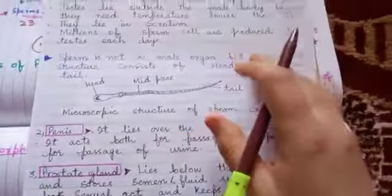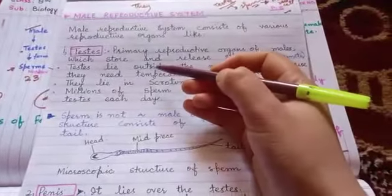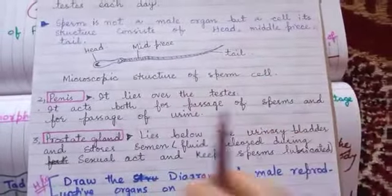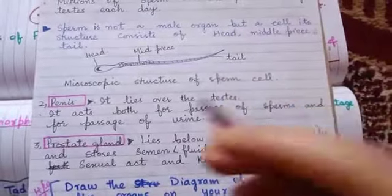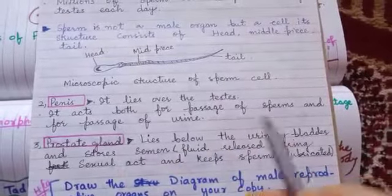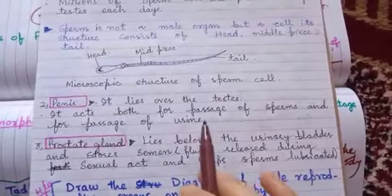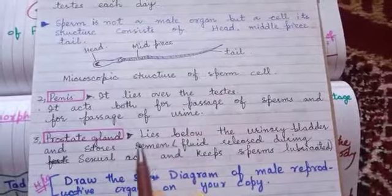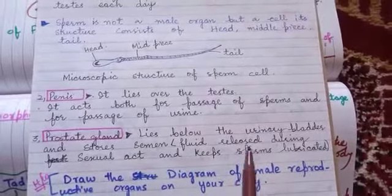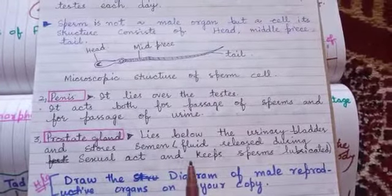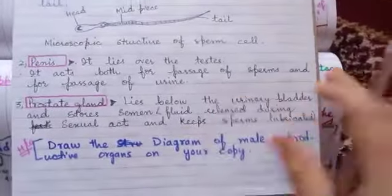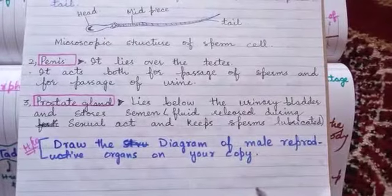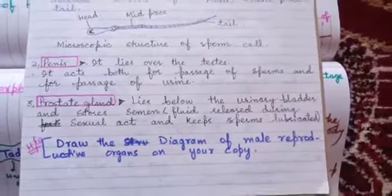The next organ is the epididymis, which lies over the testes. It acts both as a passage for sperms and for the passage of urine. The prostate gland lies below the urinary bladder and stores the fluid released during the sexual act, keeping the sperms liberated. You need to draw the male reproductive organs in your copy.